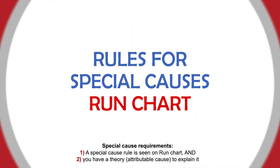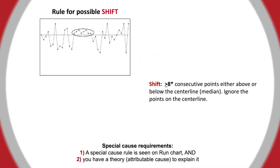Here are some examples that signal a special cause variation on run charts. To learn more about common cause and special cause variation, see our video on variation. If there are eight or more data points on one side of the centerline, this represents a shift in the system. If one data point falls exactly on the centerline, then ignore that one point in your count.